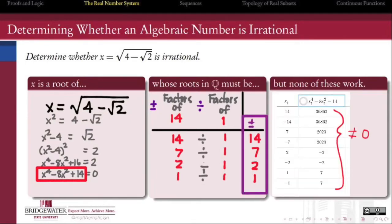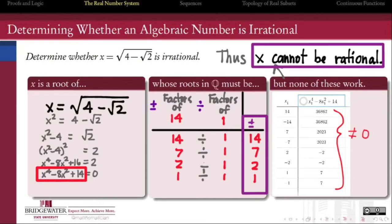Then, if we check that none of those possible rational roots are in fact a root of that polynomial, then we've ruled out the possibility that x is rational. We can also use synthetic division instead of just plugging in the numbers into the polynomial if we wish.